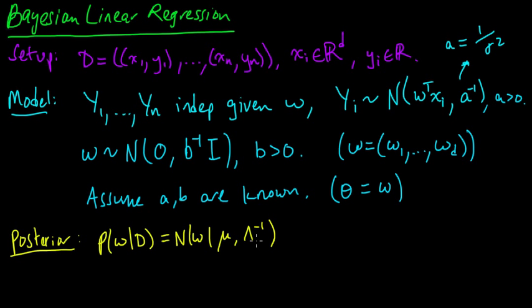It had mean μ and covariance matrix Λ⁻¹, or precision matrix Λ, for some μ and Λ. For what we're going to do next, it won't be particularly important what they are, but you can go back and look at those if you want.